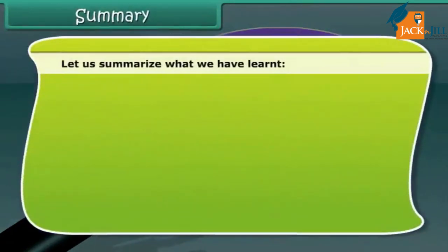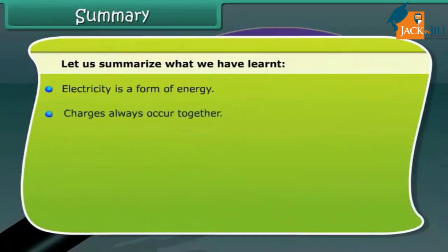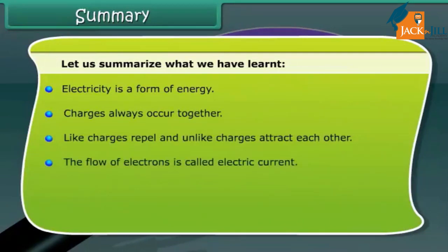Let us summarize what we have learned. Electricity is a form of energy. Charges always occur together. Like charges repel and unlike charges attract each other. The flow of electrons is called electric current.